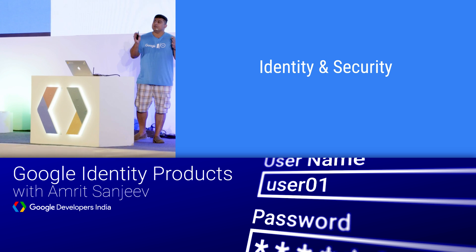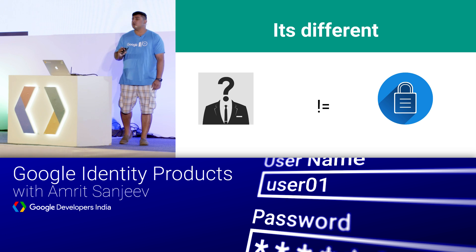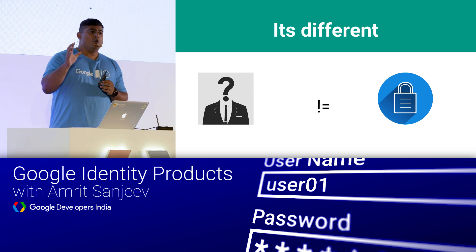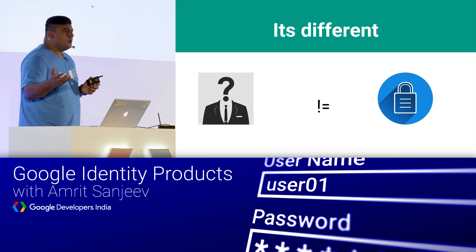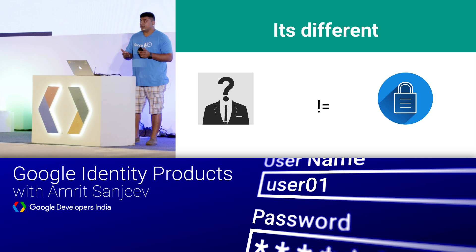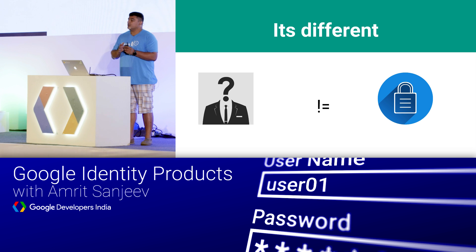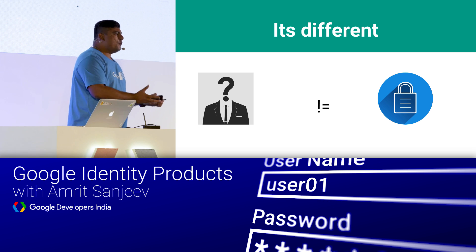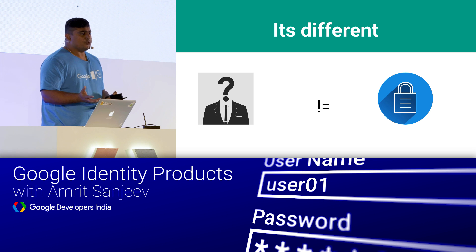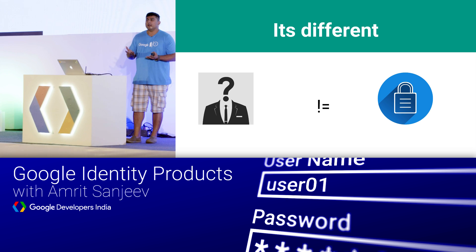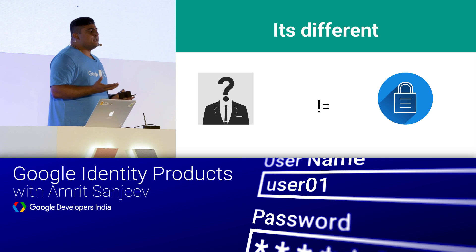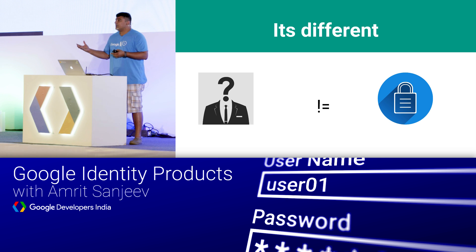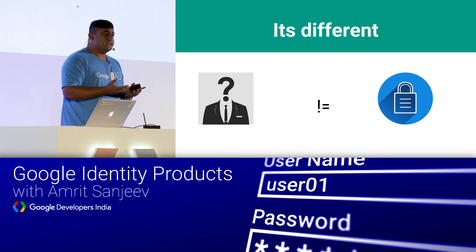Let me start with something you want to differentiate: identity and security — they're not the same. Identity is not about validating who you are; it's just getting an identifier for a particular user. Your name is your identity. Your email ID could be your identity. But when coupled with a password, when you can verify against it, that's when security comes in. A lot of times, solutions don't need security — they just need an identity. Like if you want to save a user's preference which only your app is going to understand, all you need is identity. When you want that person to be able to change it, that's when you need the security part.